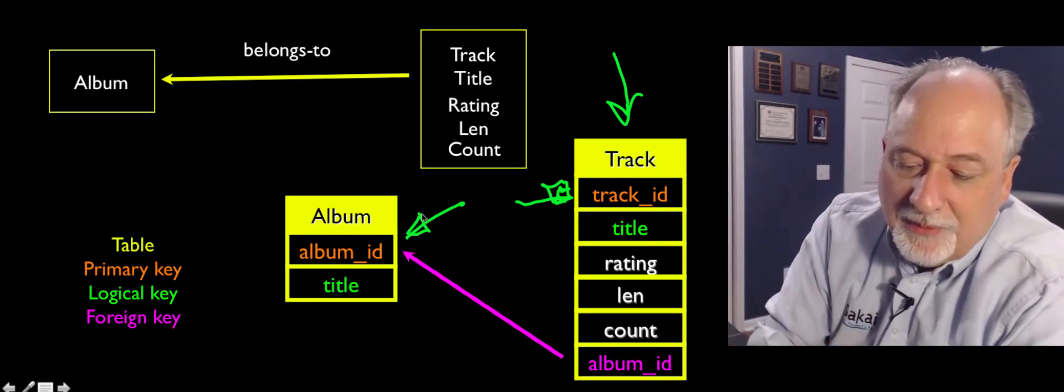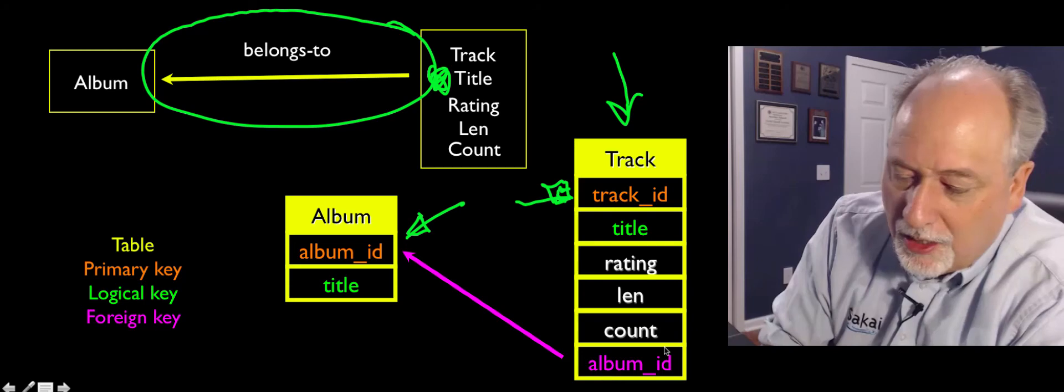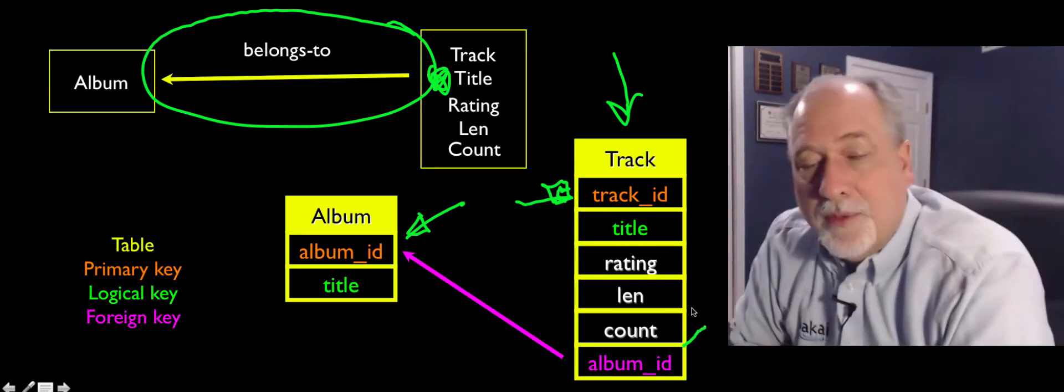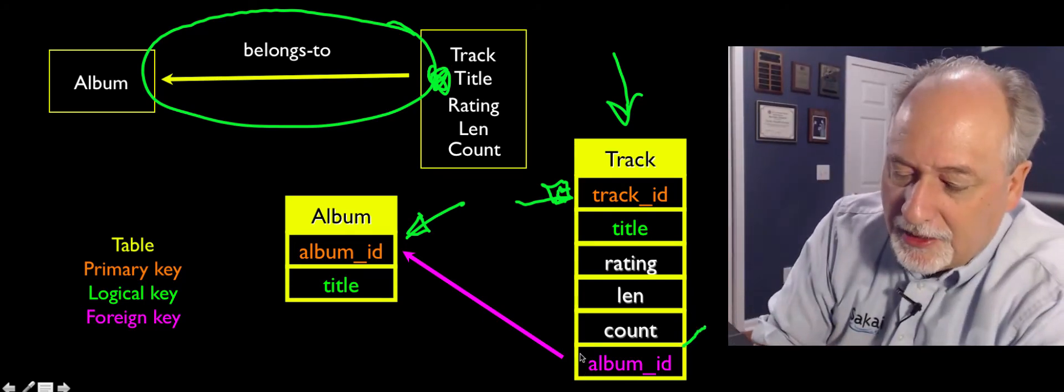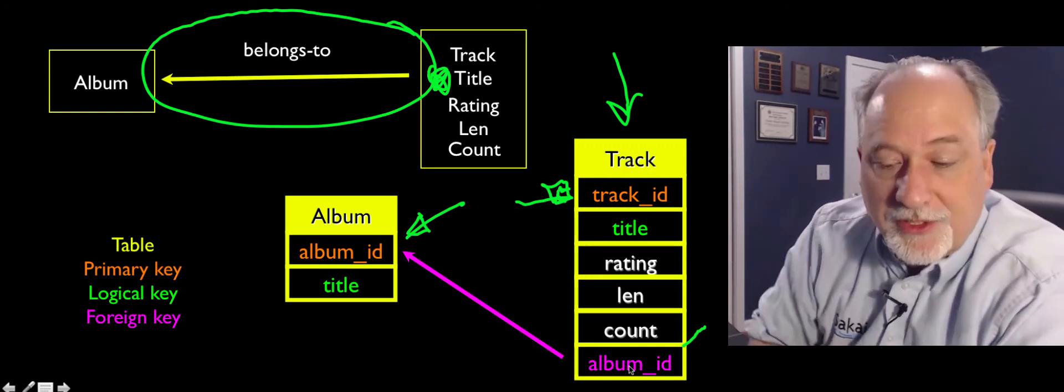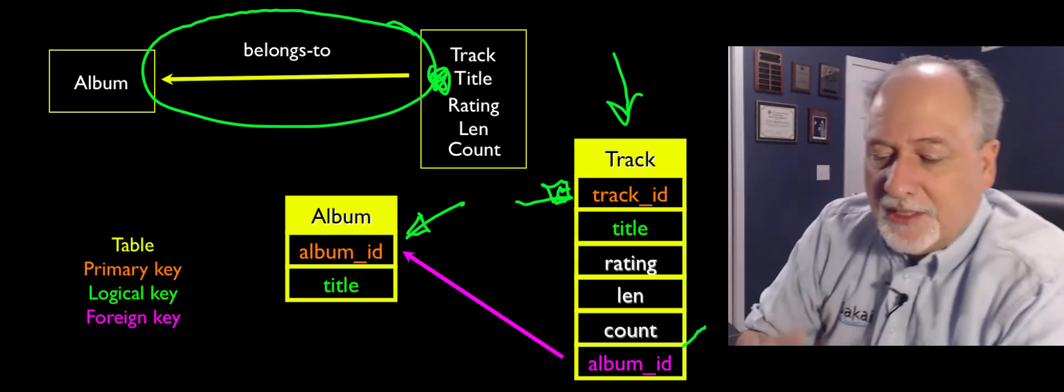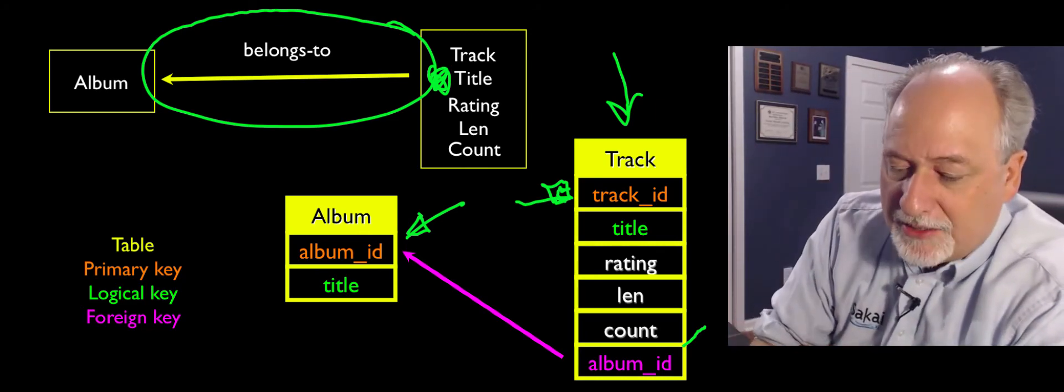And then we have a foreign key, because we gotta model this relationship. So we put a column in here, and that column ends up being called album ID, because it's telling us, this is pointing to a row in the album table. And so in my naming convention, that column is named album ID.